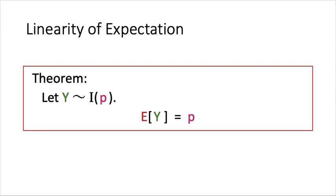After doing some calculation, it is equal to p. This is a very simple thing. Although indicators are very simple, they are super useful, as we will find out in the coming lectures.